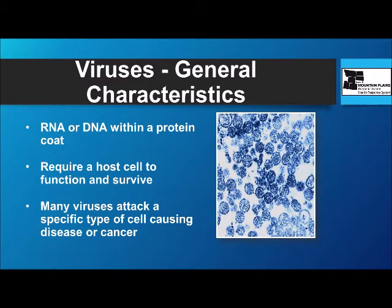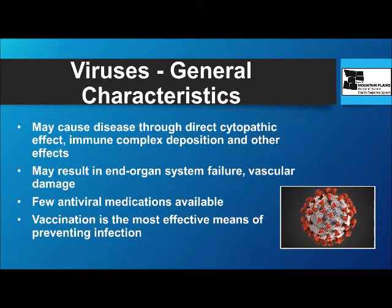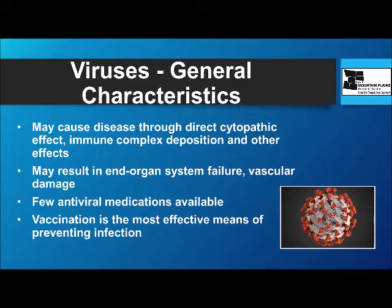Viruses are either RNA or DNA within a protein coat. They require a host cell in order to create their disease and survive. Many viruses are specific to a particular type of cell, and that leads to the disease they cause or to cancer. The disease may be a direct cytopathic effect, result from immune complex deposition, lead to end organ system failure and vascular damage. As we have seen with our recent COVID pandemic, there are few antiviral medications available that are effective against these pathogens, and vaccination is the most effective means of preventing infection.